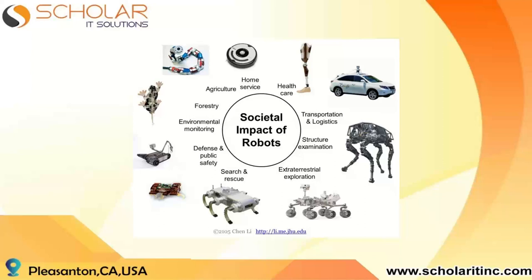I'll talk about each field where robotics is being used now and future applications. Starting with agriculture — the most important part of human survival. Medical science has improved a lot in the last 20 years, survival rates have increased, and population is rising in nearly every country. The number of farmers is reducing, farmlands are left empty, and traditional farming methods are not optimal in terms of yield per square meter.